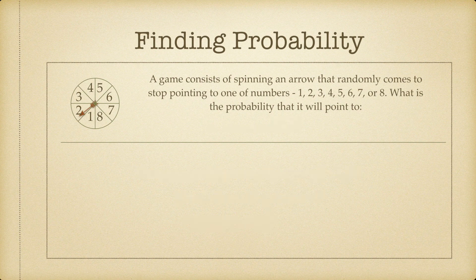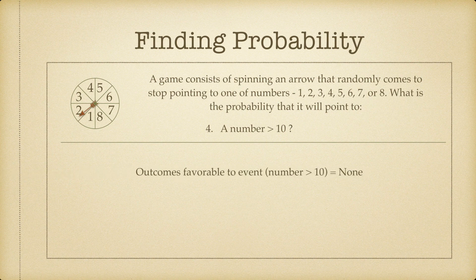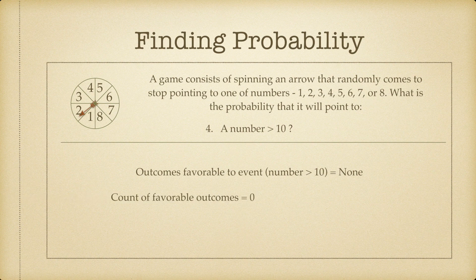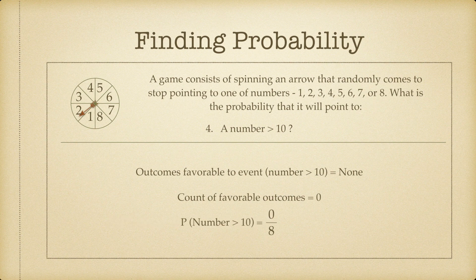One final example: what is the probability that the arrow will point to a number which is greater than 10? How many outcomes are favorable where our event is a number greater than 10? Well, 8 is the largest number, so we have no number which is greater than 10 — in fact, no number greater than 8. The count of favorable outcomes is 0, so the probability of that event is 0 divided by 8, or simply 0. We call these events where probability is 0 as impossible events.